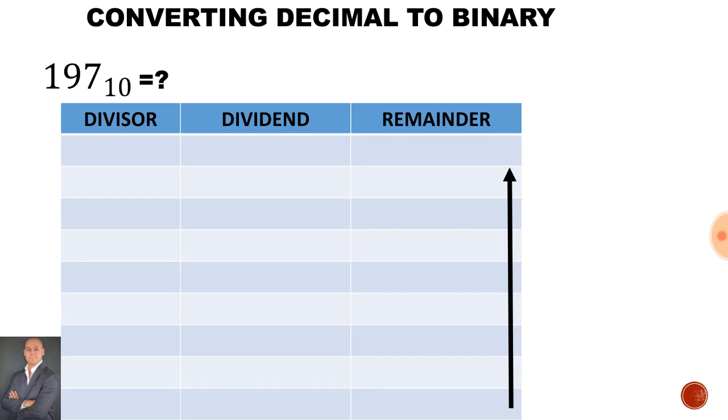Well here I have a table. I've divided the table into three columns: we have the divisor, the dividend, and the remainder. The remainder will be the answer for the binary number. Now when we read the answer, we read it from the bottom of the column going up to the top of the column.